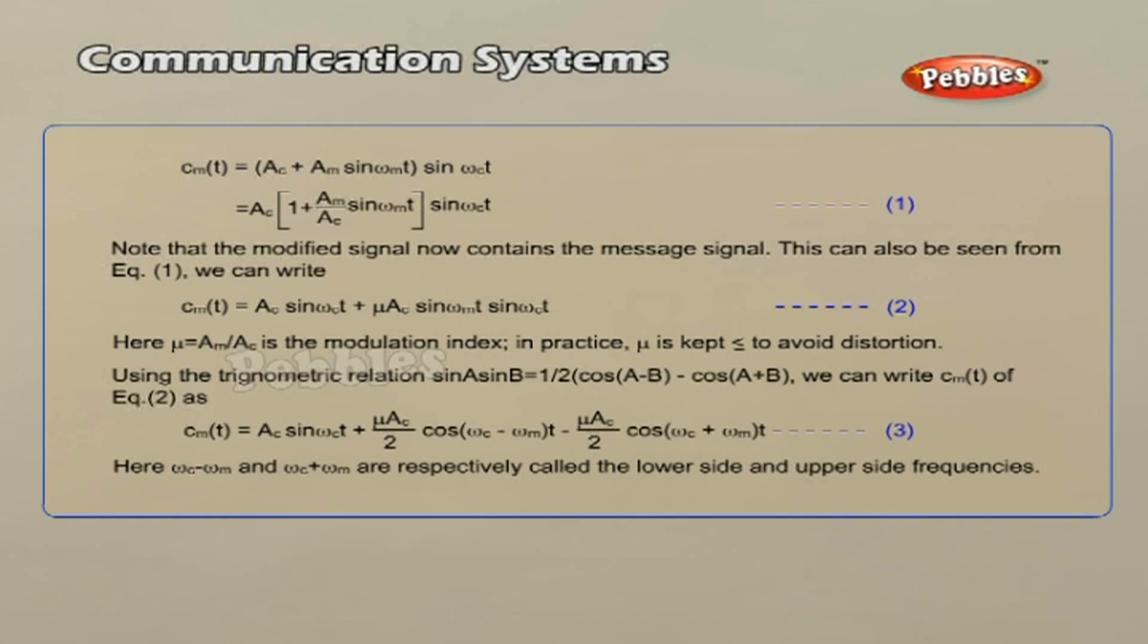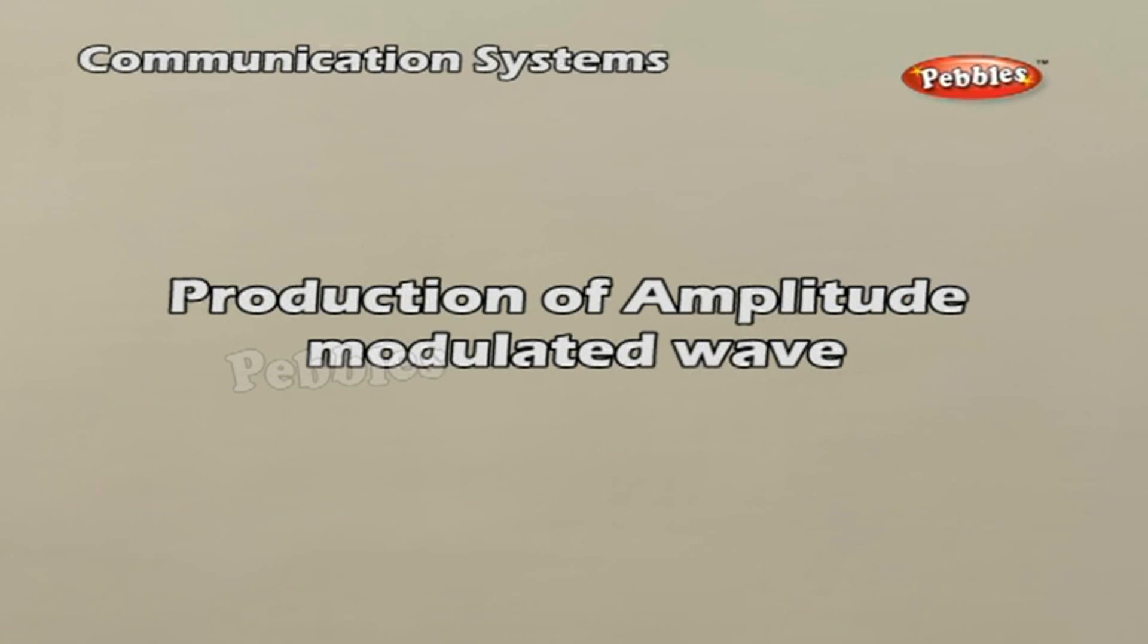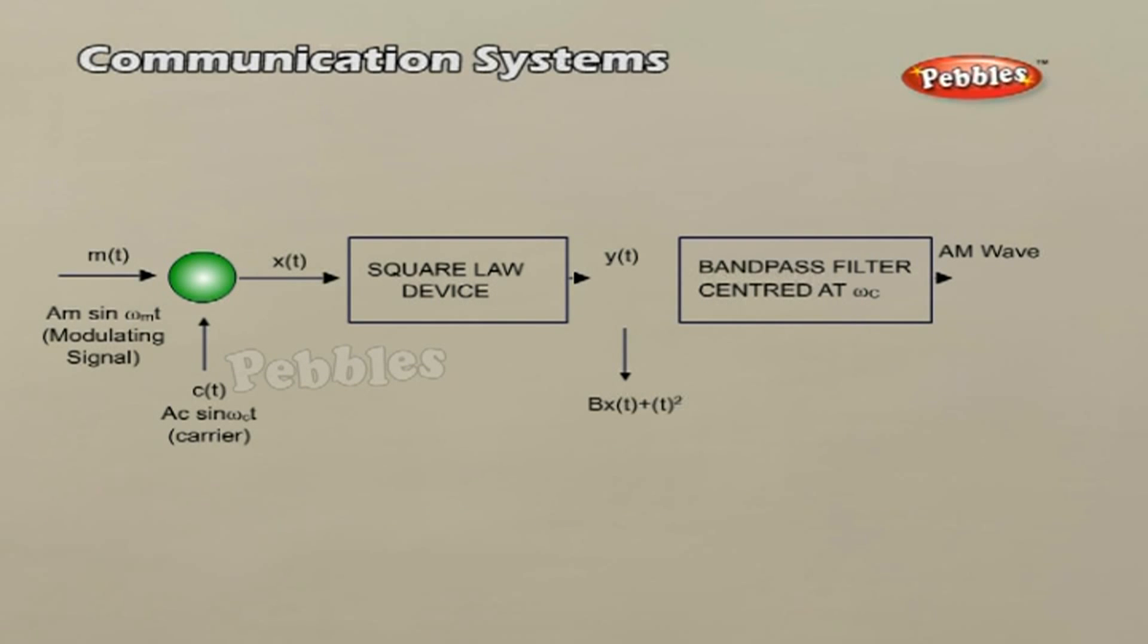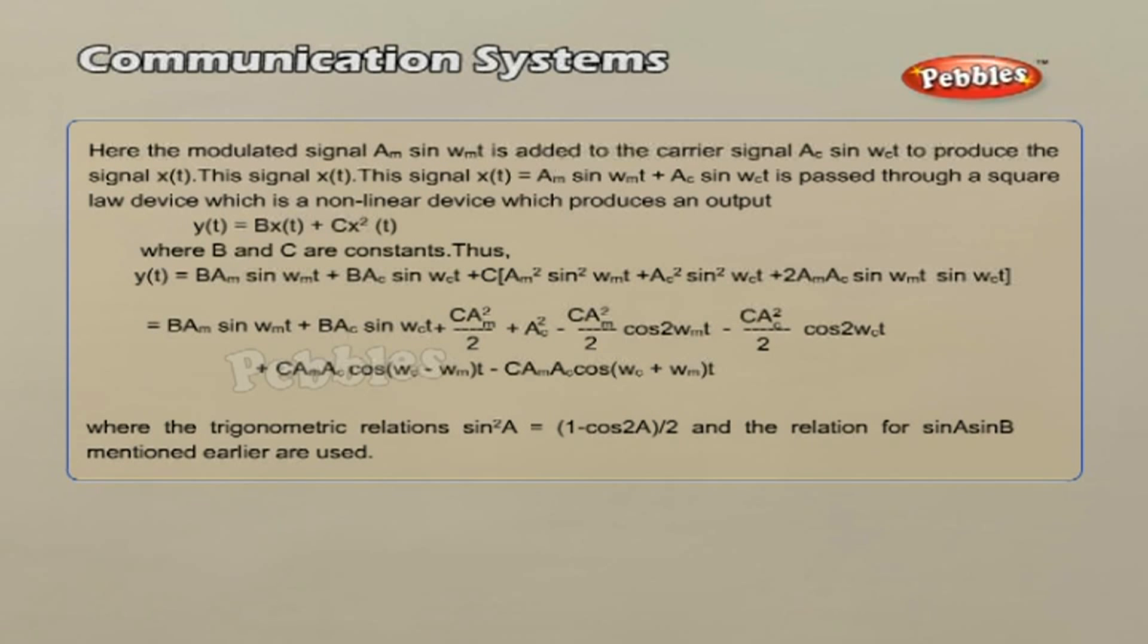The frequency spectrum of the amplitude modulated signal is shown in the figure. Production of amplitude modulated wave. Amplitude modulation can be produced by a variety of methods. A conceptually simple method is shown in the block diagram of the figure.